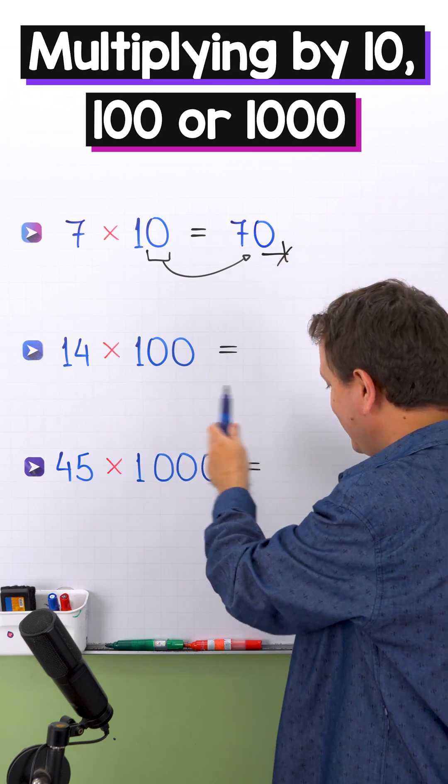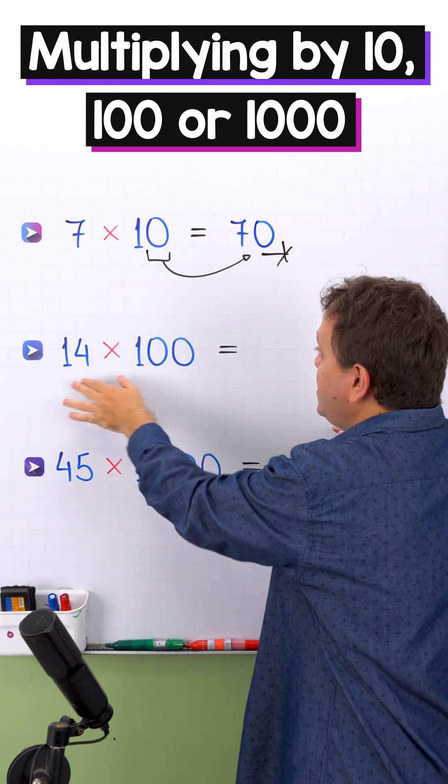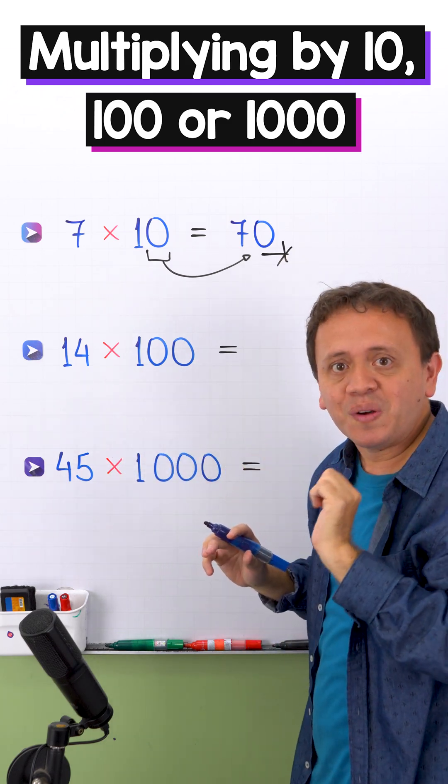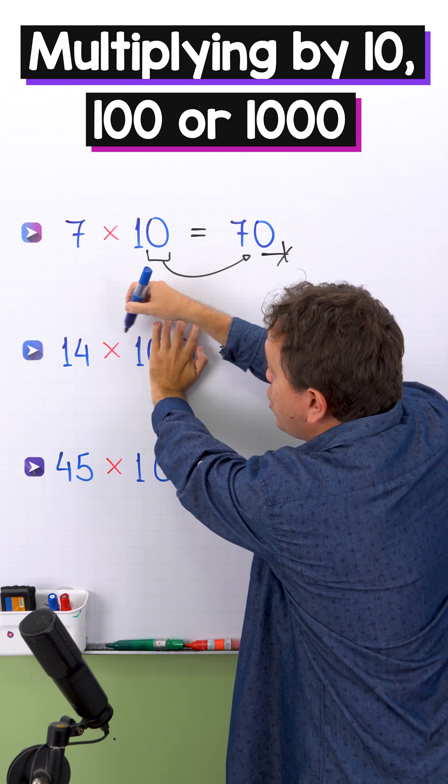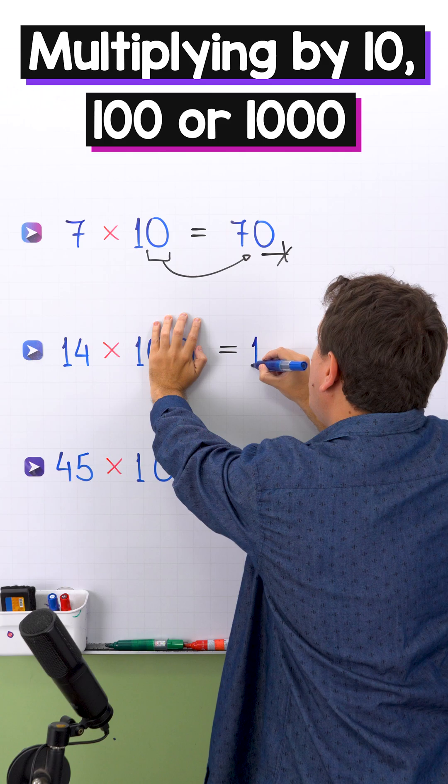Perfect. In the second example, we need to multiply 14 times 100. First, we're going to hide the 0s from the 100, and now we have 14 times 1. 14 times 1 gives us 14.